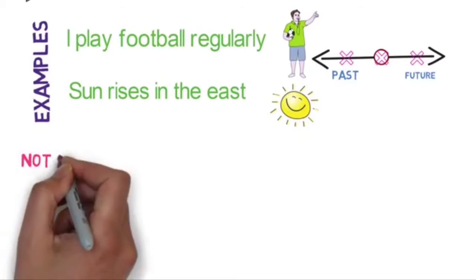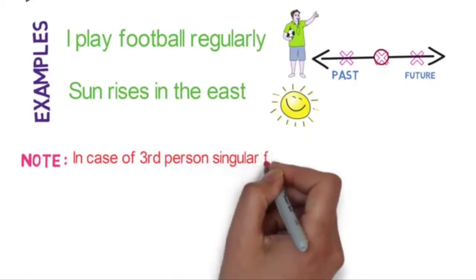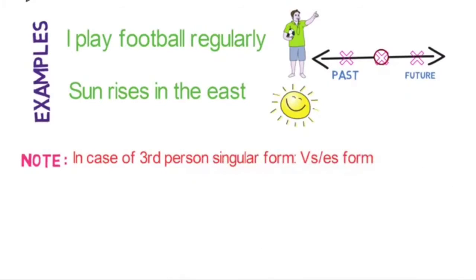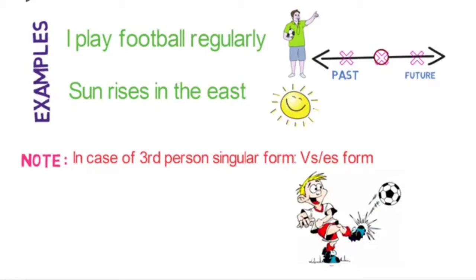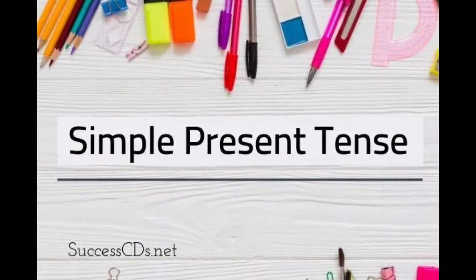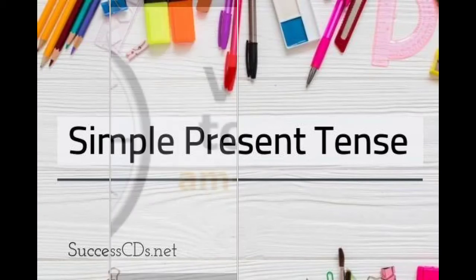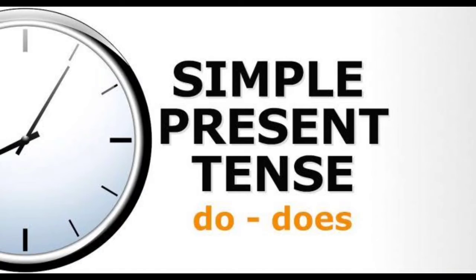An important note, children: in the case of the third person singular form, the S or ES form of the verb is used. For example, 'Ram plays football regularly.' In simple present tense, we use the be-form of verbs such as am, is, and are, and the do-form of verbs such as do and does.